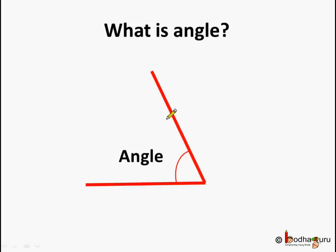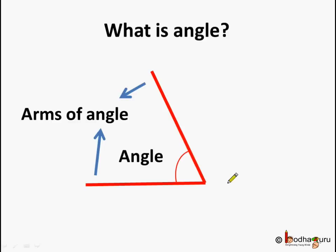And what are these two lines called? When two straight lines meet at a point to form the angle, the two straight lines are called the arms of the angle. And the point where these two straight lines meet to form an angle is called the vertex. This is the vertex of this angle.